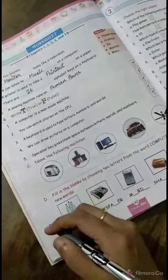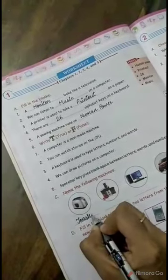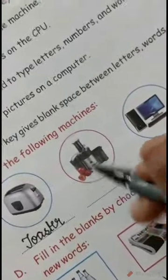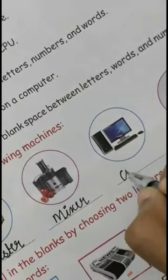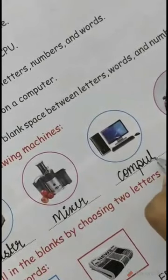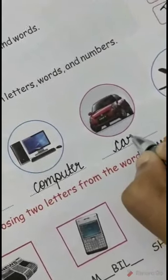Third question, children: name the following machines. Here they are given a few machines which we have to name. The first one, which you can find in your kitchen, is a toaster — write down toaster. The second machine, also in your kitchen, is a mixer. The third machine is a computer. The fourth machine is a car. And the last one is a fan.